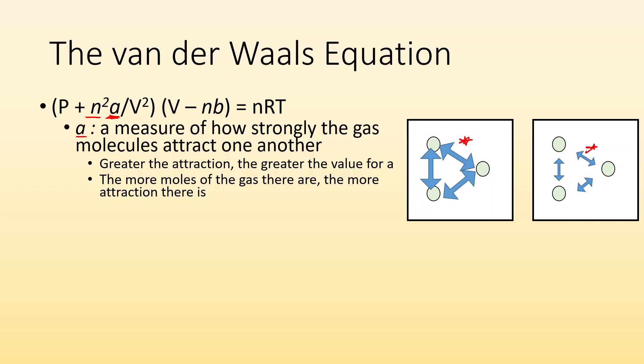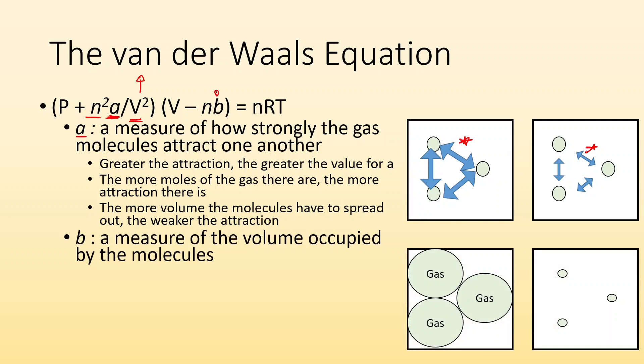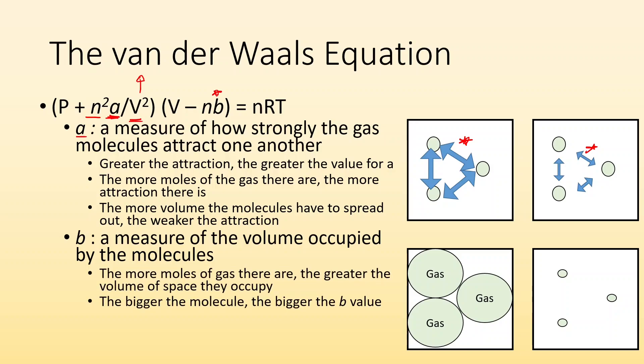The more volume you have for those particles to spread out, this is all divided by V squared. If you increase the volume, they have more room to spread out, which means the attraction is lessened. The effect of how attracted they are is less if they have a bunch of room to spread out. Now b is accounting for the fact that those gas particles take up volume. The more moles of gas there are, the greater the volume of space that those gas particles will occupy, which is why we have n times b. The bigger the molecule, the bigger the b value for it.